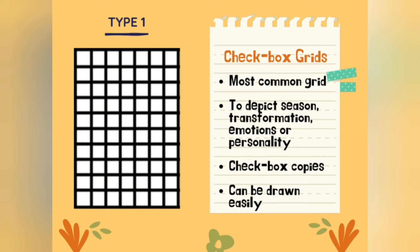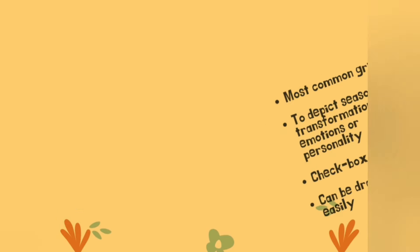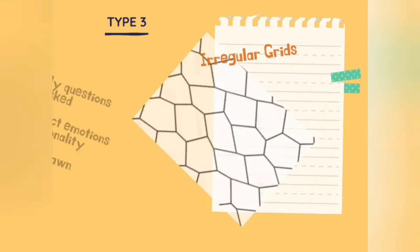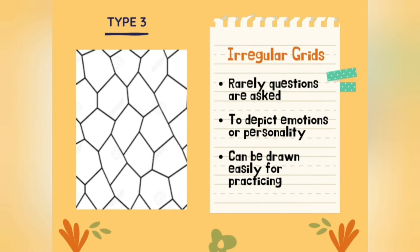Our next type of grid is hexagonal grids. They are generally used to express emotions. They can be very time-consuming if you're drawing by hand, so take printouts for practicing. Our next type of grid is irregular grids — they are used to depict emotions or personality, and questions are rarely asked from this kind of grid. That was all about types of grids.